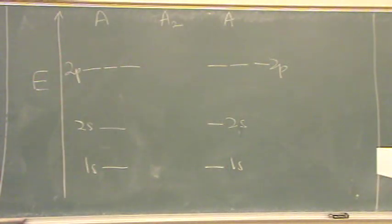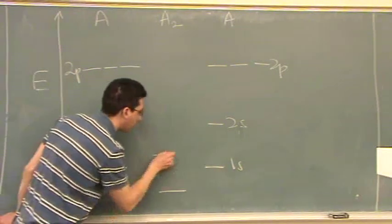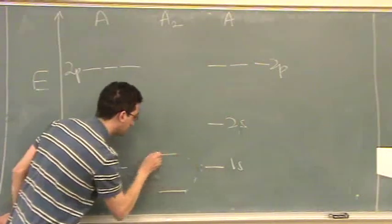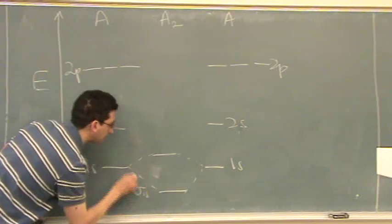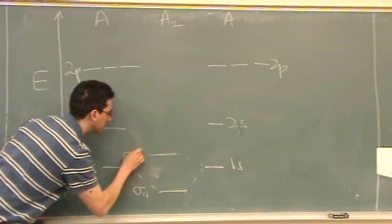Okay, now I'm going to draw in all, so what I've drawn is the atomic orbitals so far, now I'm going to draw in the molecular orbitals. So, for the 1s, there's a bonding, the lower energy, and an anti-bonding. So you've got sigma 1s and sigma 1s star.